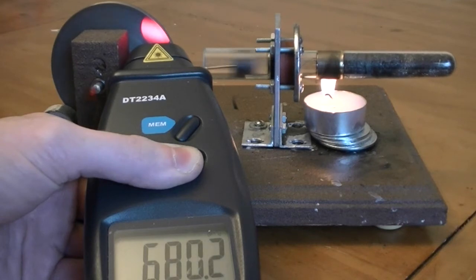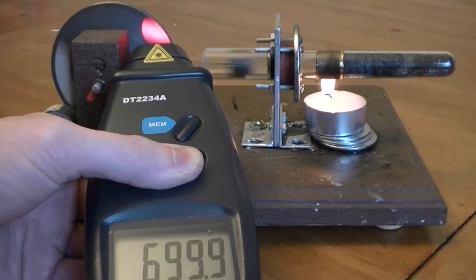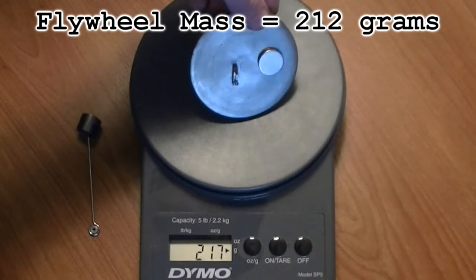The flywheel on this engine is a lot heavier than the one on lamina 1. Lamina 1's flywheel is 124 grams and this one weighs 212 grams.